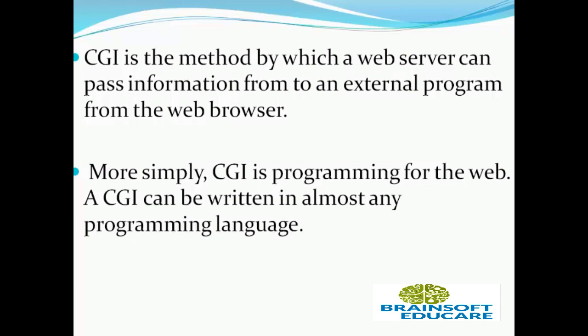CGI is a specification for transferring information between a web server and a CGI program. A CGI program is any program designed to accept and return data that conforms to the CGI specification. The program could be written in any programming language including C, Perl, Java, JavaScript, or Visual Basic.